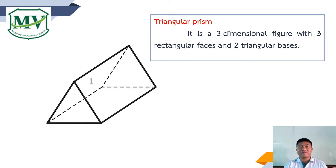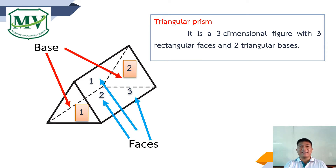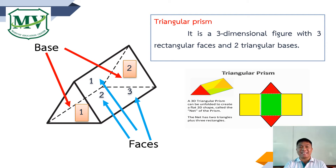These are the faces of the triangular prism: one, two, and three. These are the bases of the triangular prism: one and two. To help us understand the base and the face of a triangular prism, here is the net of the triangular prism. The net has two triangles and three rectangles.